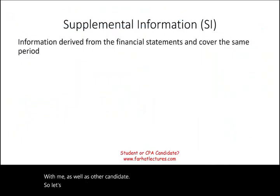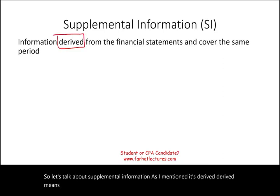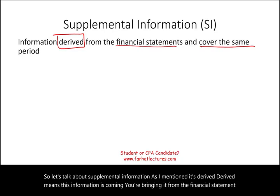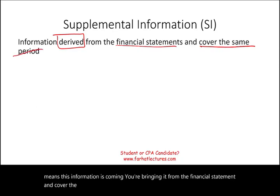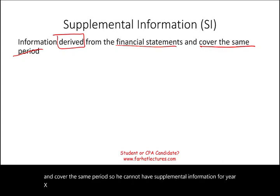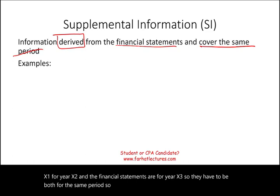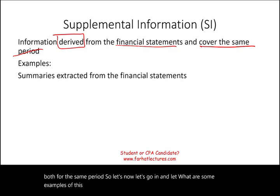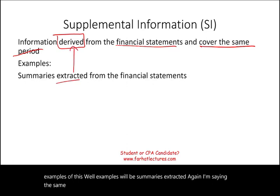Let's talk about supplemental information. As mentioned, it's derived — meaning this information is coming from the financial statements and covers the same period. You cannot have supplemental information for year X1 or X2 when the financial statements are for year X3; they have to be for the same period. Examples include summaries extracted — derived — from the financial statements.